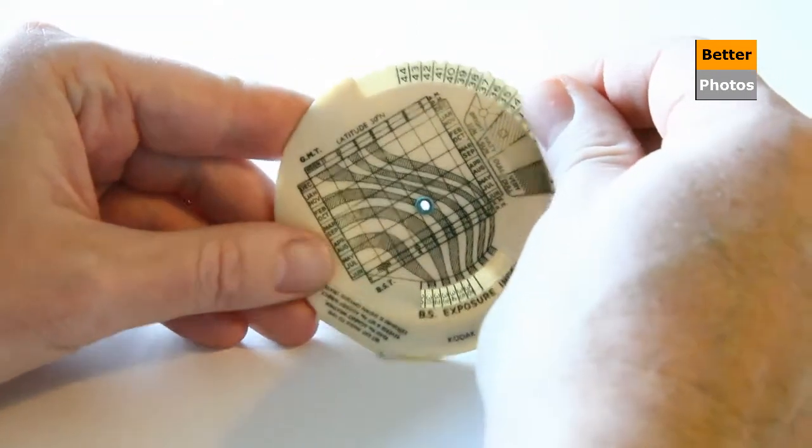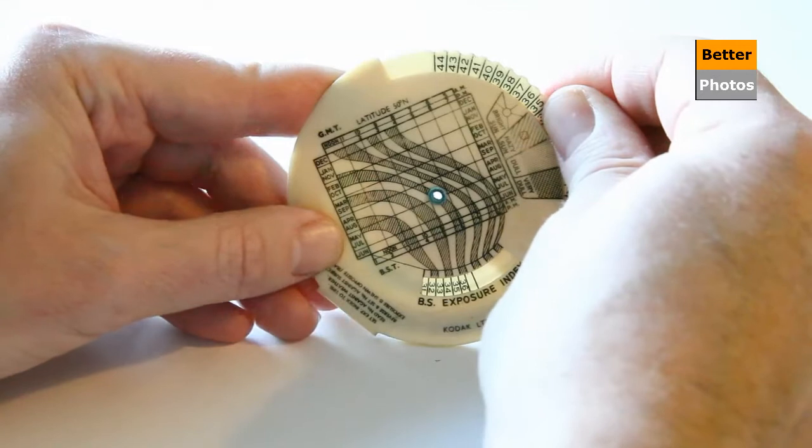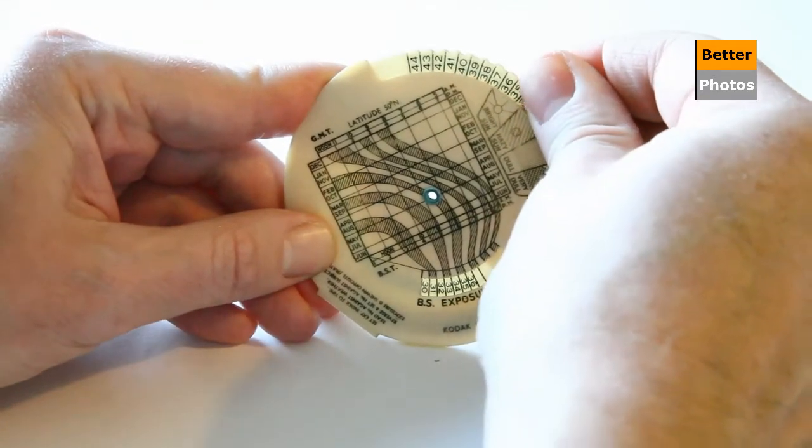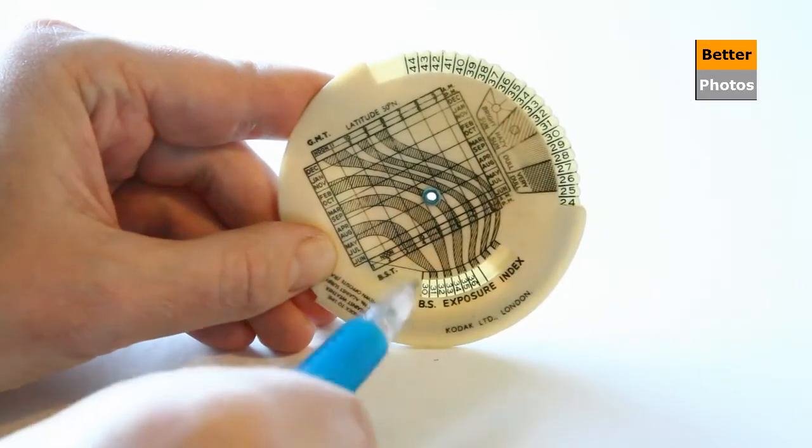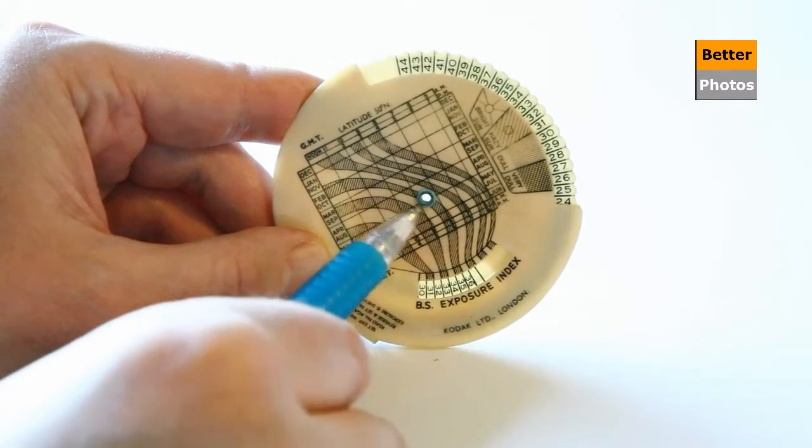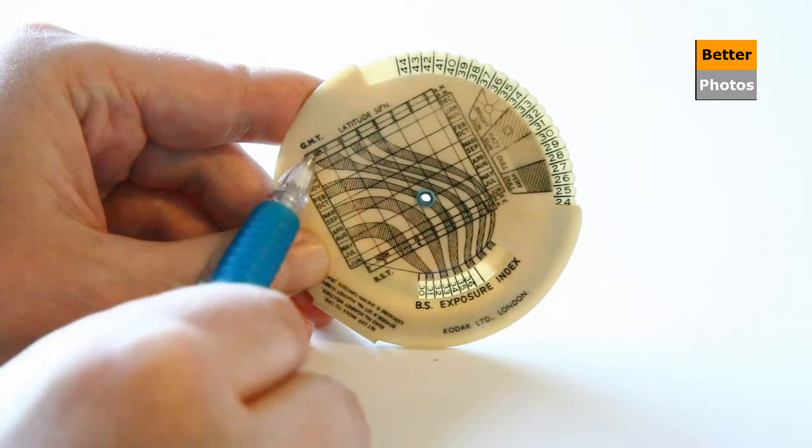So in this case we're going to say it's 34 which equates to 200 film speed, so I've dialed that in, you can just about see that there tying in with October and noon.